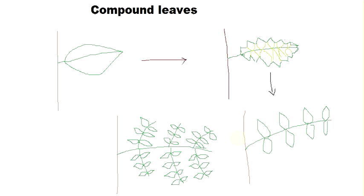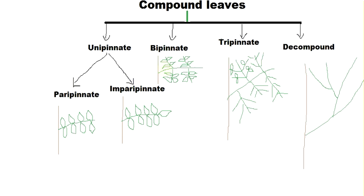These leaves may again have incisions and convert into smaller leaflets. That process makes an entire leaf into a compound leaf. Such leaves are called compound leaves. The classification of compound leaves includes pinnately compound leaves — and later we will also talk about palmately compound leaves. Pinnately compound leaves are classified as unipinnate, bipinnate, tripinnate, and decompound.